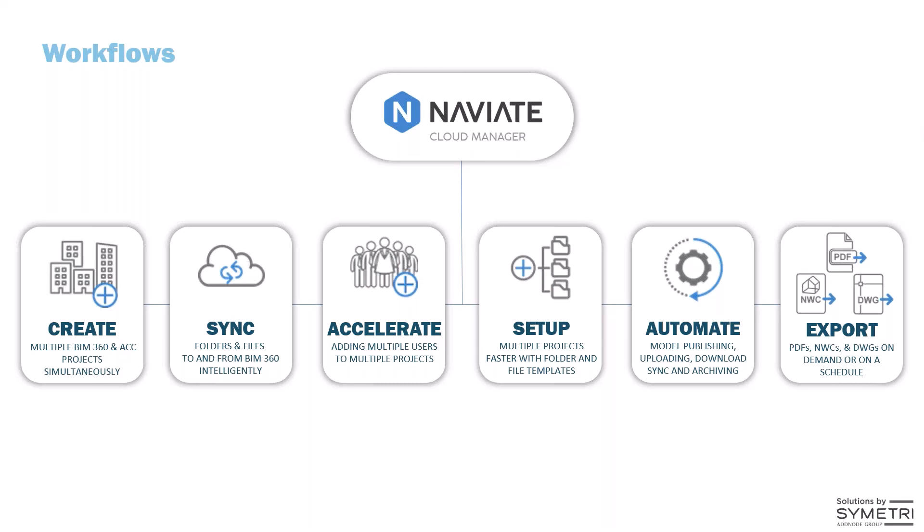Automated uploads and downloads can be done in bulk for multiple projects at the same time, controlled by filters so you can be selective on which folders, file types, and files are included when scheduling recurring upload or download syncs. We also have an archiving component that will help you back up on a schedule. Finally, we have export of PDF, NWC, and DWG that can be done on demand or on a schedule, deployable to a network server so it doesn't tie up your machine — a huge time saver for users.